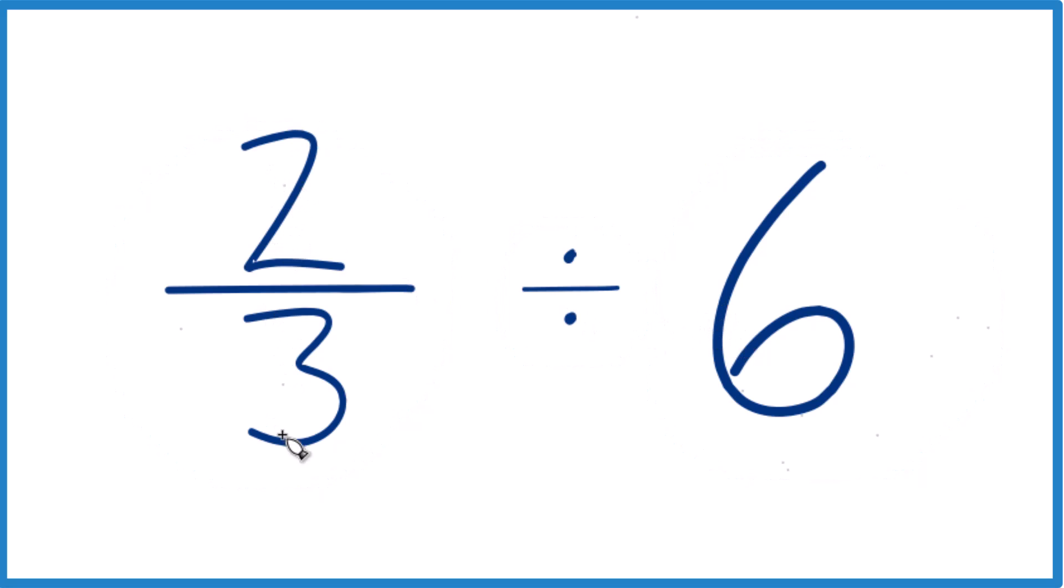First off, two-thirds, that's less than one, so we're trying to see how many times six goes into a number that's less than one. So we should get a small number. We should get a fraction.